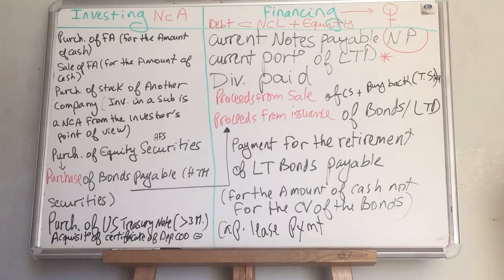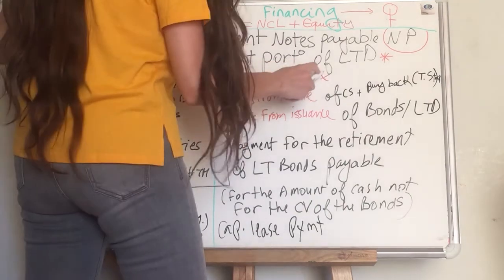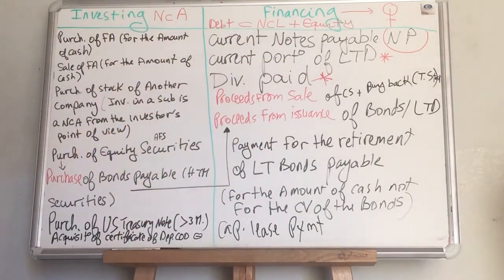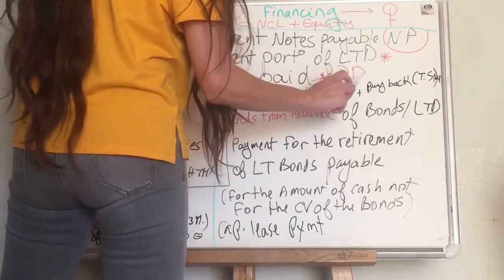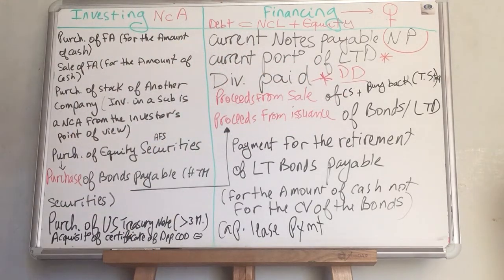Dividends paid to your shareholders is reported in the financing section. You will get trapped: they might tell you dividends declared. Who cares? They are just declared, not paid. If dividends are received, take it into consideration in the operating section. If they just tell me dividends are declared — I don't care about that. I care about them if they are paid (financing section) or received (operating section).